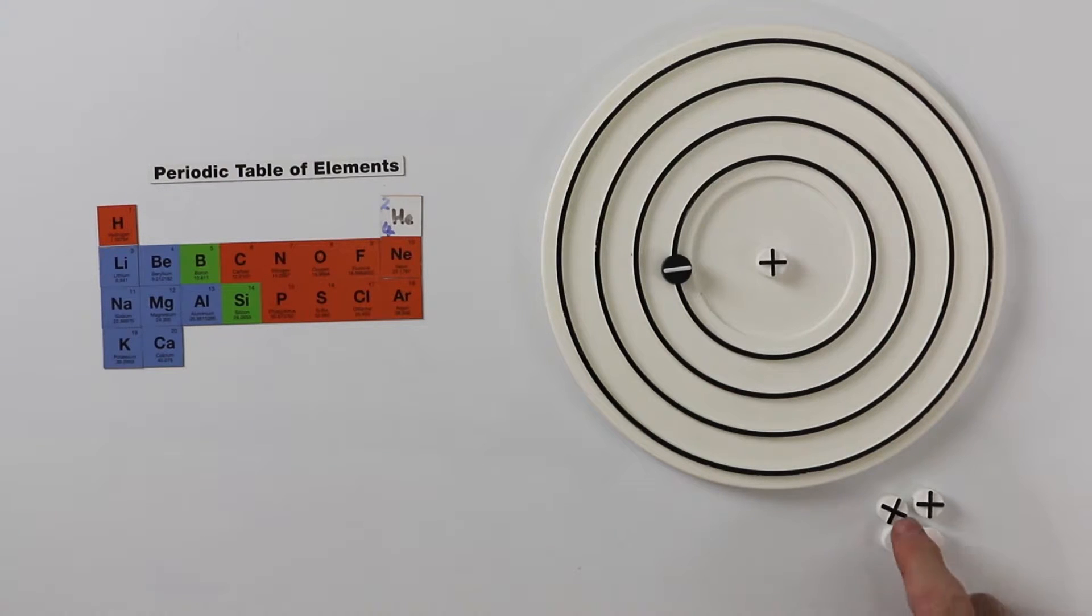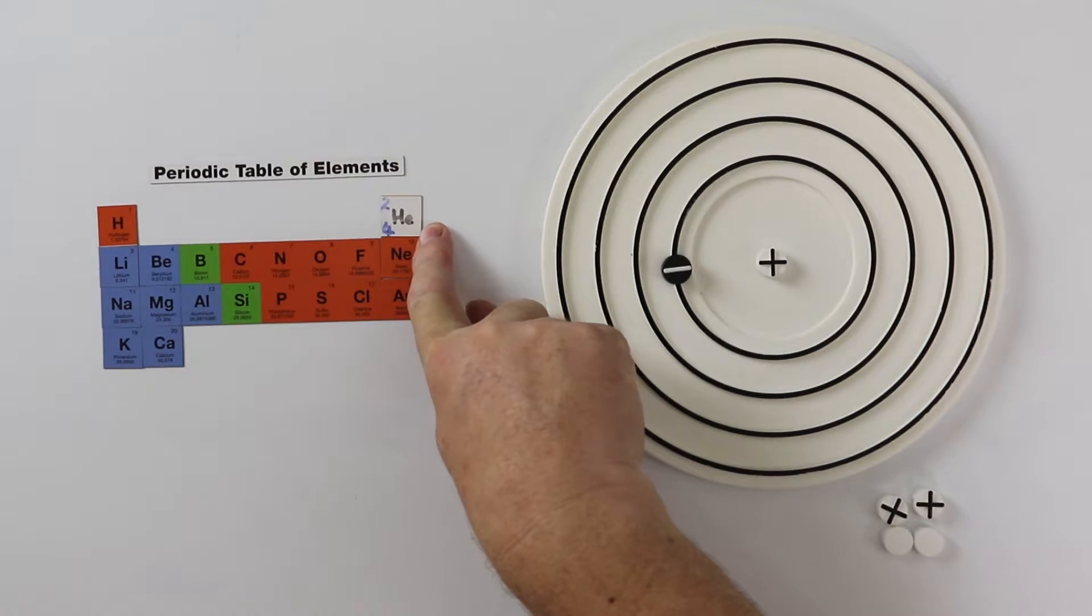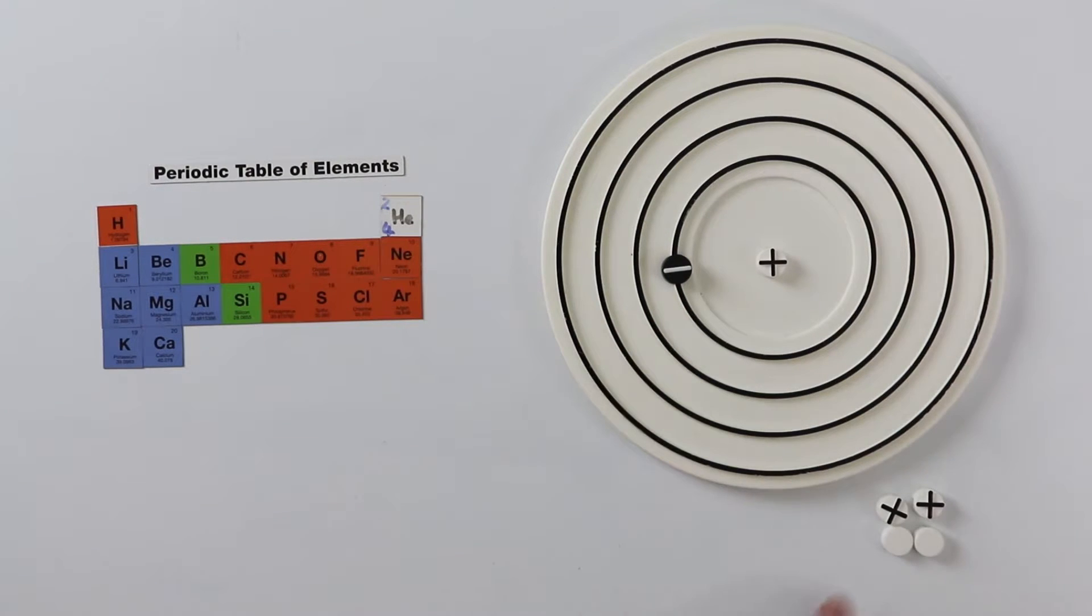Both the protons and the neutrons have a mass of one, so helium's relative atomic mass is four. Because helium has two plus charges, it must have two negative charges to counteract and balance the atom.